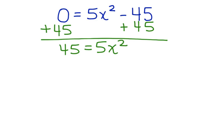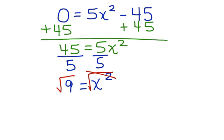To get x alone, we're going to divide both sides by 5. That takes us one step closer. 45 divided by 5 is 9. 9 equals x squared. We take the square root of both sides. This cancels, leaving us with x is equal to a positive or a negative 3. This is the solution to our quadratic equation.